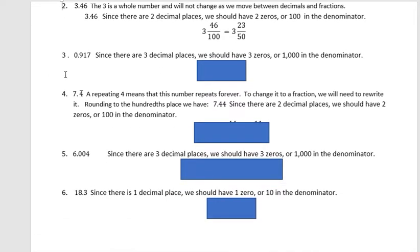Example number three, zero and nine hundred seventeen thousandths. There are three decimal places, which means three zeros or one thousand in the denominator. This one does not reduce. There's no common factors between the numerator and denominator. So nine hundred seventeen over one thousand is in lowest terms.